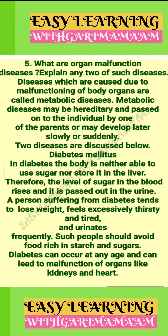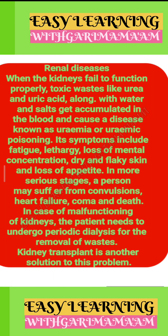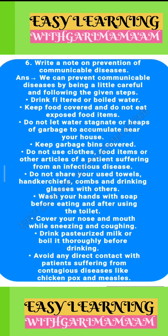Renal diseases: When the kidneys fail to function properly, toxic wastes like urea and uric acid, along with water and salts, get accumulated in the blood and cause a disease known as uremia or uremic poisoning. Symptoms include fatigue, lethargy, loss of mental concentration, dry and flaky skin, and loss of appetite. In more serious stages, a person may suffer from convulsions, heart failure, coma, and death. Periodic dialysis and kidney transplant are solutions to this problem.